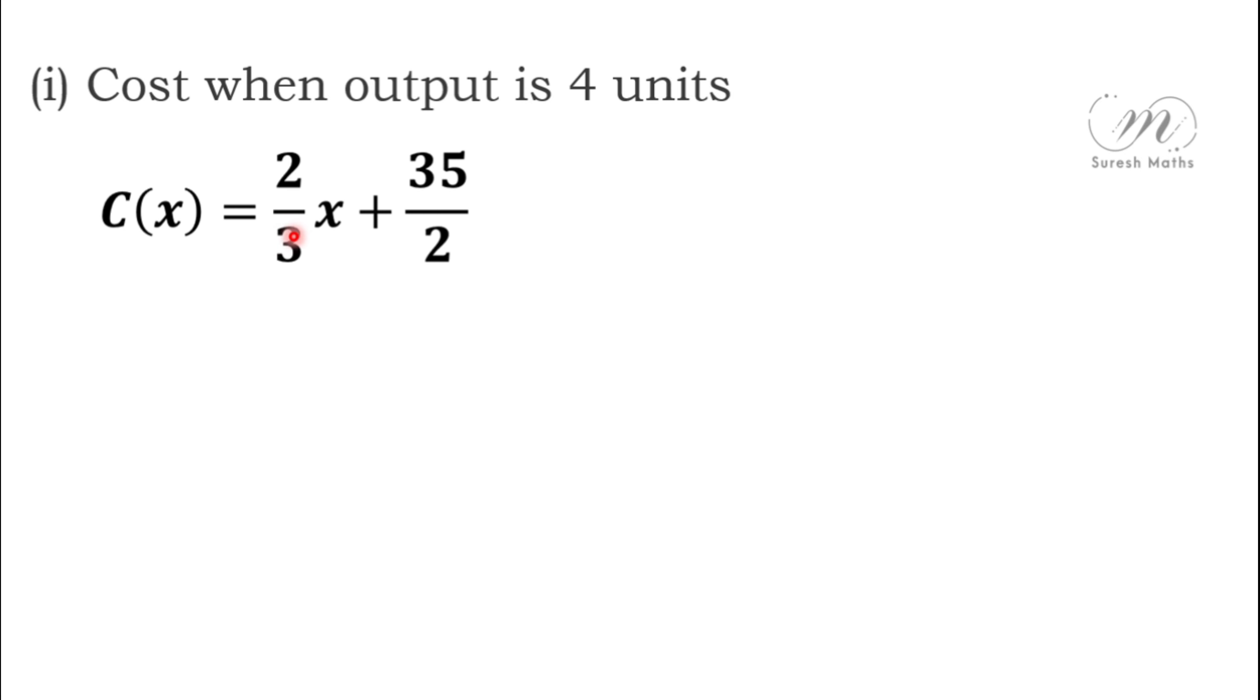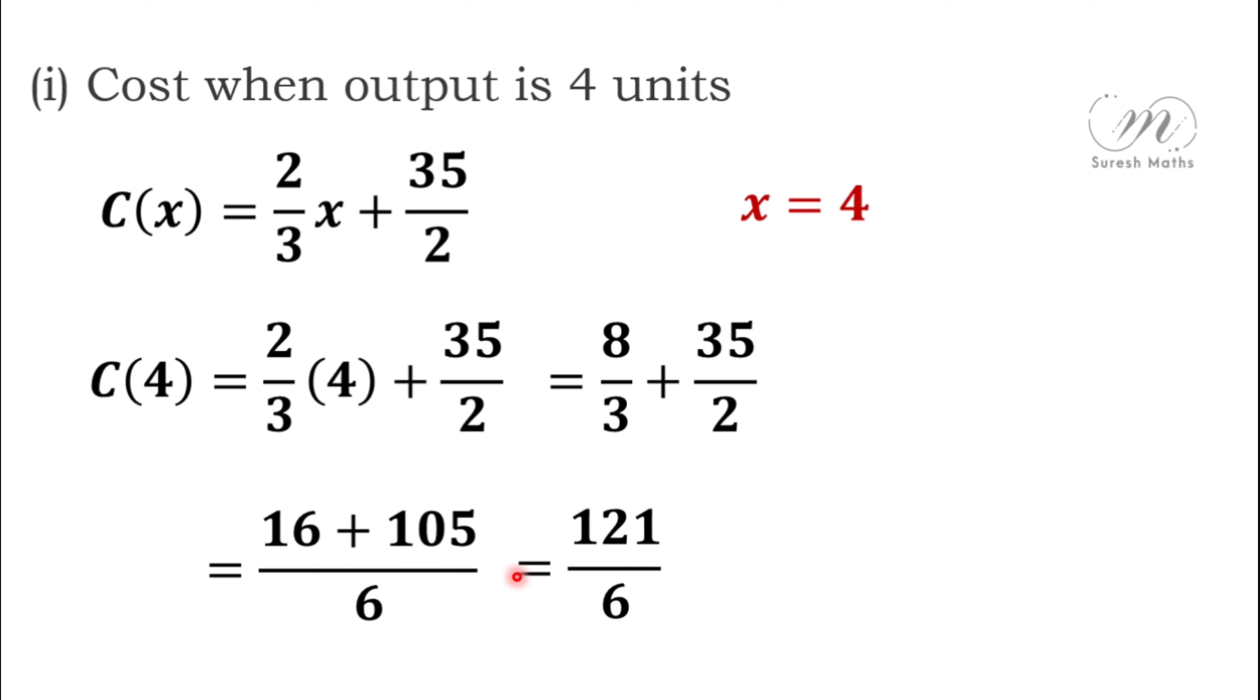Cost function is 2/3x + 35/2. We substitute x equal to 4. So C(4) = 2/3 × 4 + 35/2 = 8/3 + 35/2. Cross multiply: 16 plus 105 divided by 6. Sum is 121/6. This is the required answer for cost.